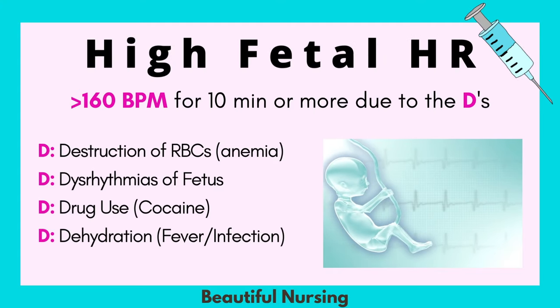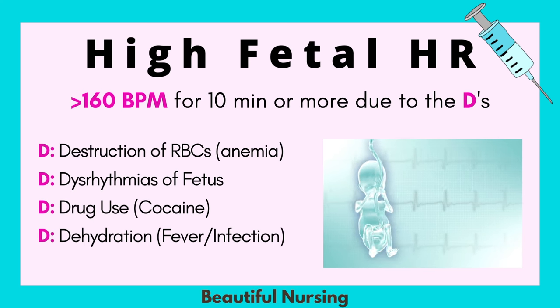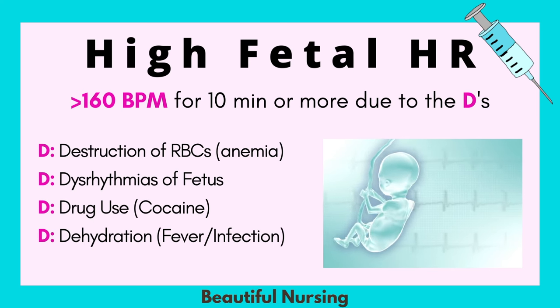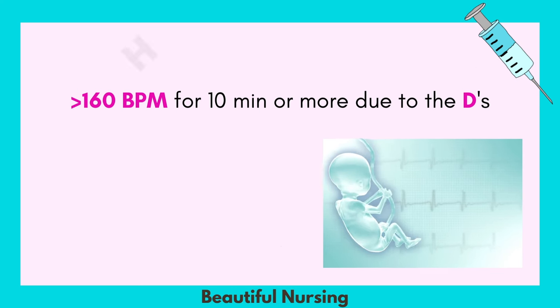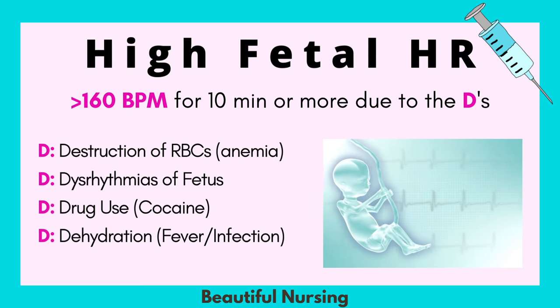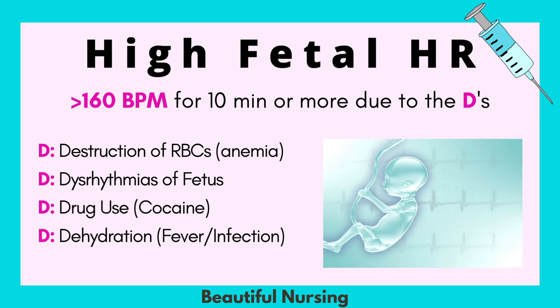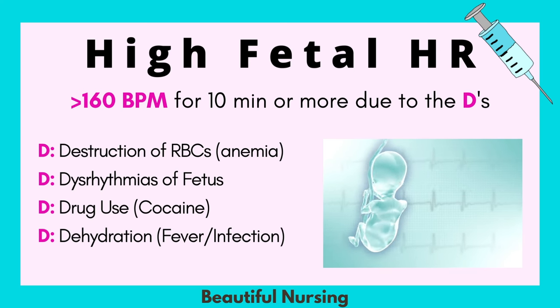If you see a high fetal heart rate — considered 160 or greater beats per minute for 10 minutes or more — this can be due to the Ds: destruction of red blood cells (anemia), dysrhythmias of the fetus, drug use, or dehydration with fever or infection. The treatment for a high fetal heart rate is going to be antipyretics, oxygen, or an IV fluid bolus.